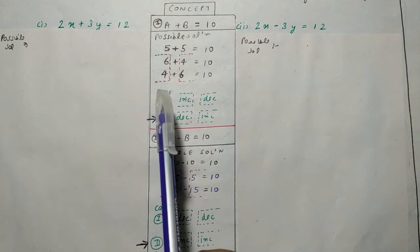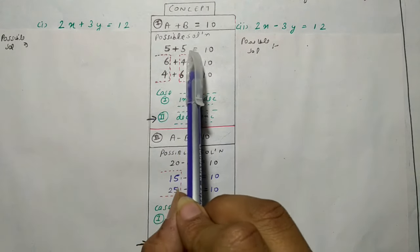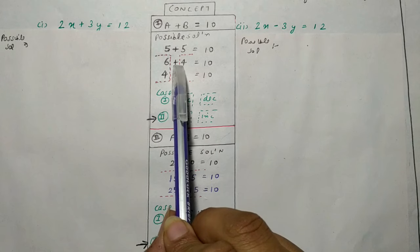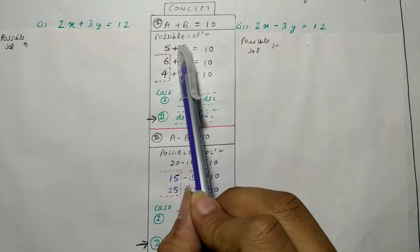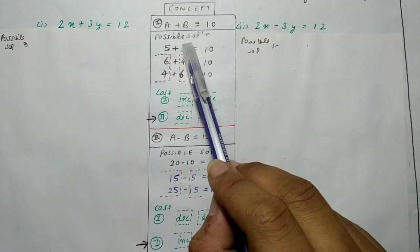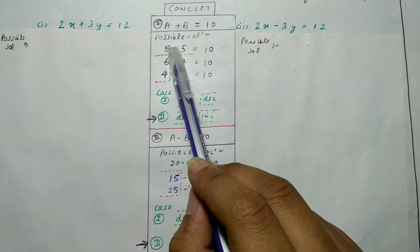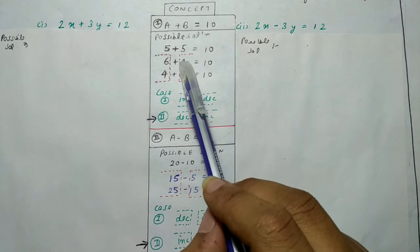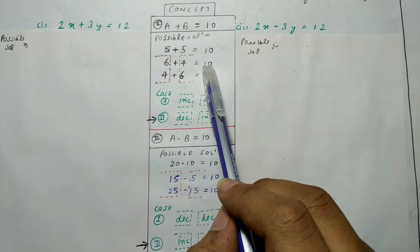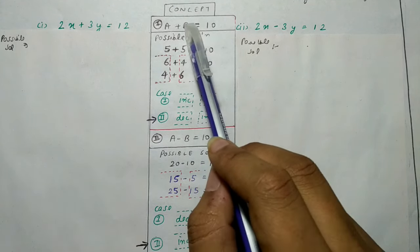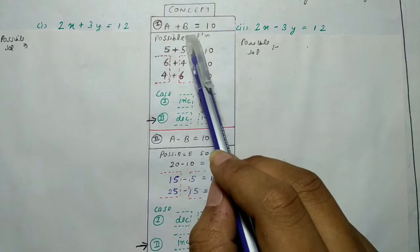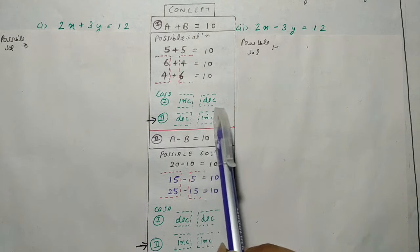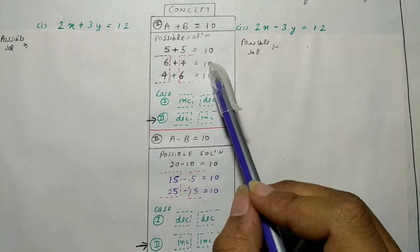Key observation: plus sign वाले case में, जब मैंने left interface बढ़ाया (5 to 6) तो right interface कम हुआ (5 to 4)। और जब left interface कम किया (5 to 4) तो right interface बढ़ा (5 to 6)। इसलिए plus sign के case में: एक entity बढ़ाने पर दूसरी entity कम होगी, और एक entity कम करने पर दूसरी entity बढ़ेगी।